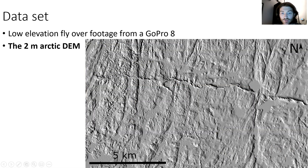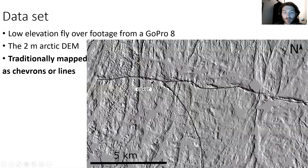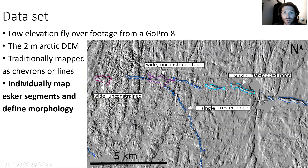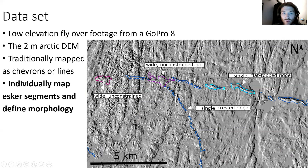This is our esker ridge on our DEM. Traditionally, eskers have been mapped as chevrons or lines — this is the Ailsworth and Schultz 2012 shapefile of the Exeter Lake Esker. In our mapping, I am trying to identify different geomorphological elements, including single crested ridges in blue, single flat top ridges in light blue, wide broad bodies, and some broad unconstrained bodies without a ridge.